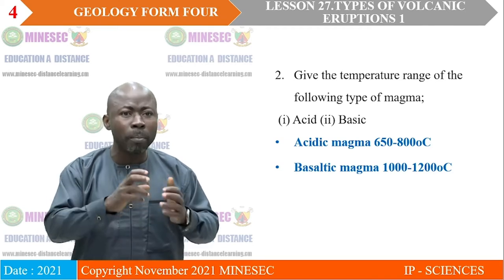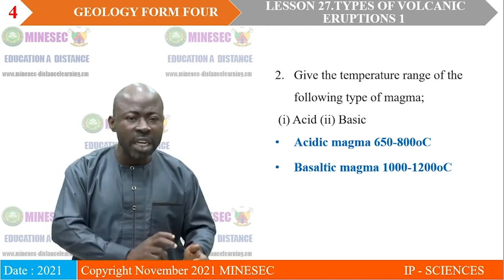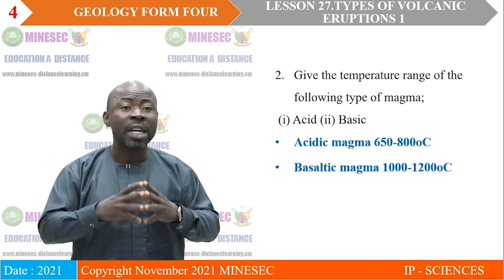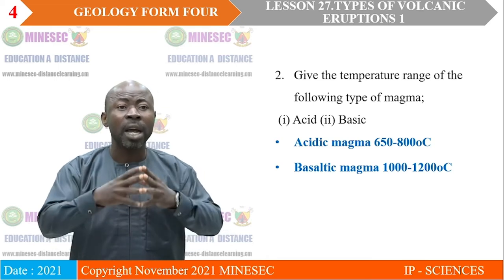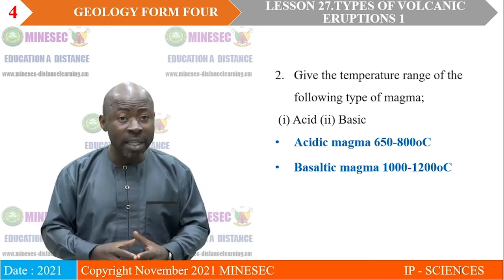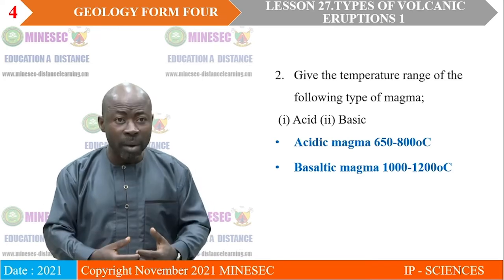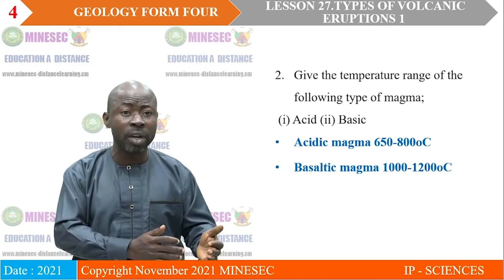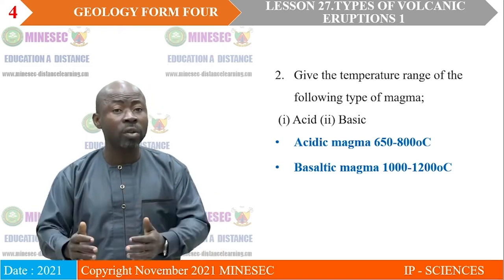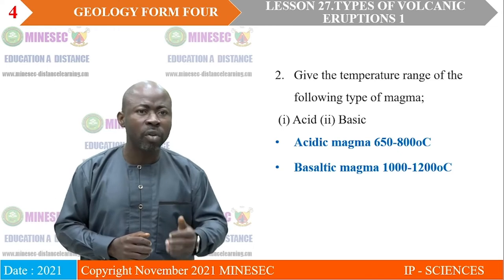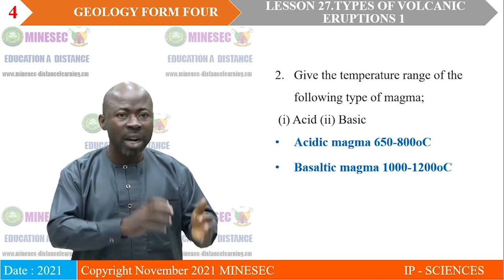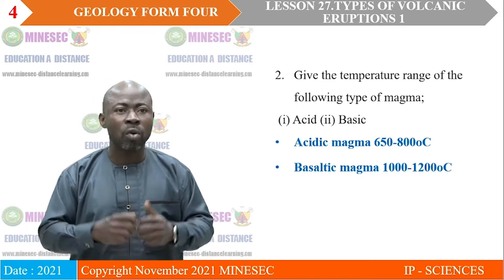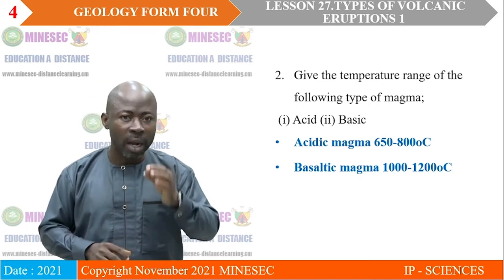If the temperature of a magma is verified to range from 1,000 to 1,200 degrees centigrade, then that magma is referred to as basaltic magma or basic magma. Therefore, the temperature range of acid magma is from 650 to 800 degrees centigrade, while the temperature range of basic magma ranges from 1,000 to 1,200 degrees centigrade. If you did that correctly, those were supposed to be your answers.